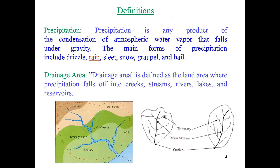At the very beginning we need to know some definitions — maybe some of you already know these, but let's do a quick review. The first one is precipitation. Basically, precipitation is any product of the condensation of atmospheric water vapor that falls under gravity. The main forms of precipitation include drizzle, rain, snow, etc.